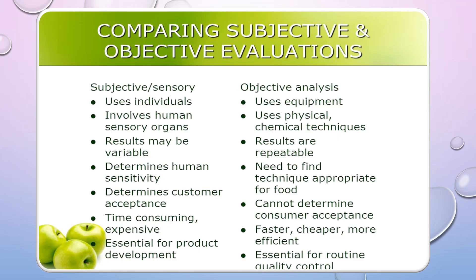Comparing subjective and objective methods of food evaluation: subjective methods use human individual sensory organs, whereas objective analysis uses equipment, physical and chemical techniques. In subjective evaluation, results may be variable depending upon human taste, whereas in objective analysis results are repeatable. Subjective analysis is very time consuming and expensive, whereas objective analysis is faster, cheaper and more efficient. Subjective evaluation determines customer acceptance, whereas customer acceptance cannot be analyzed using objective evaluation methods.